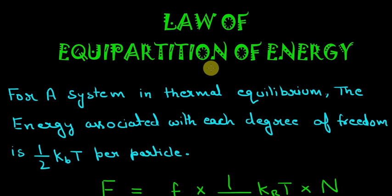So this law states that for a system in thermal equilibrium the energy associated with each degree of freedom is half kBT per particle. Now here is a concept of degrees of freedom and we have studied that. So if you haven't watched that video watch that video from the card up here or link in the description or go to the video from the channel page.